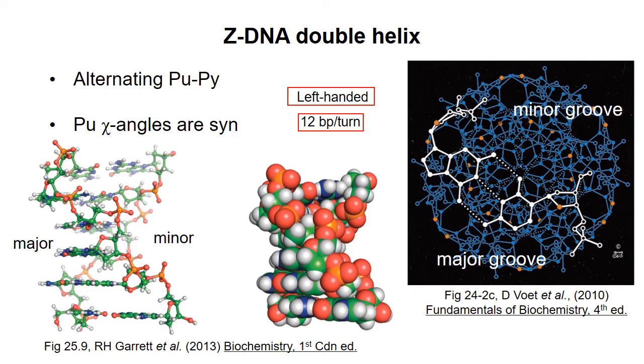Unless specifically noted, anytime I'm talking about DNA double helix in this course, you can assume I'm talking about B-DNA, since it is the most common type of DNA structure found in cells. So in the next video, I'll go into more detail about the forces that stabilize these helical structures.